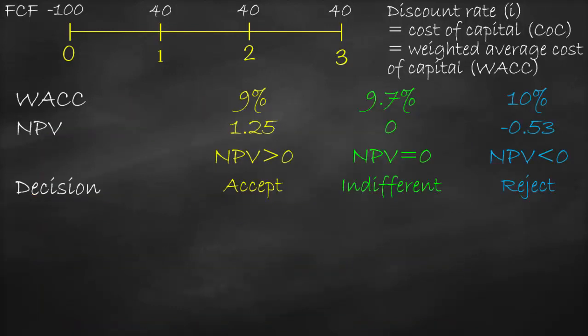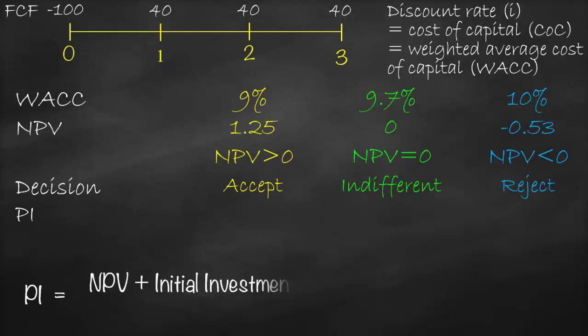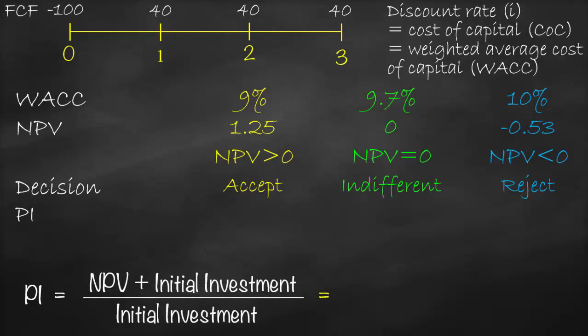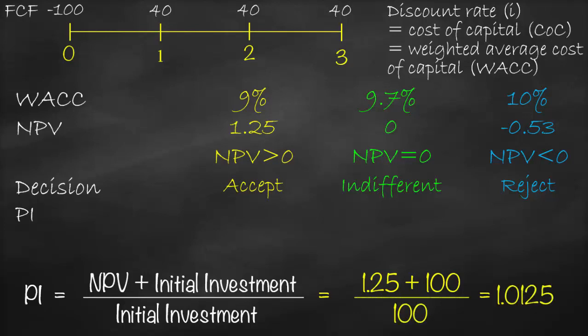So in the previous videos, we already calculated net present value at three different scenarios of three different WACCs. Now we need to calculate the profitability index at WACC 9%. The formula of profitability index is equal to net present value plus initial investment divided by initial investment. This is equal to net present value of 1.25 million plus our initial investment of 100 — we put the value without the negative sign — divided by 100. This will give us 1.0125. Therefore, our profitability index at WACC 9% is 1.0125, and we will accept the project.